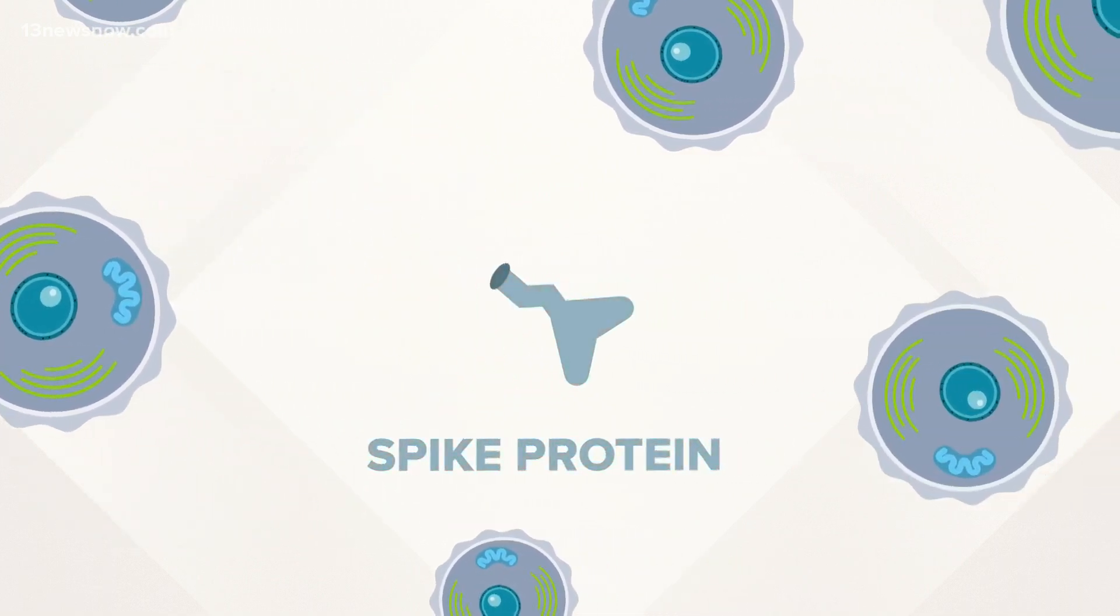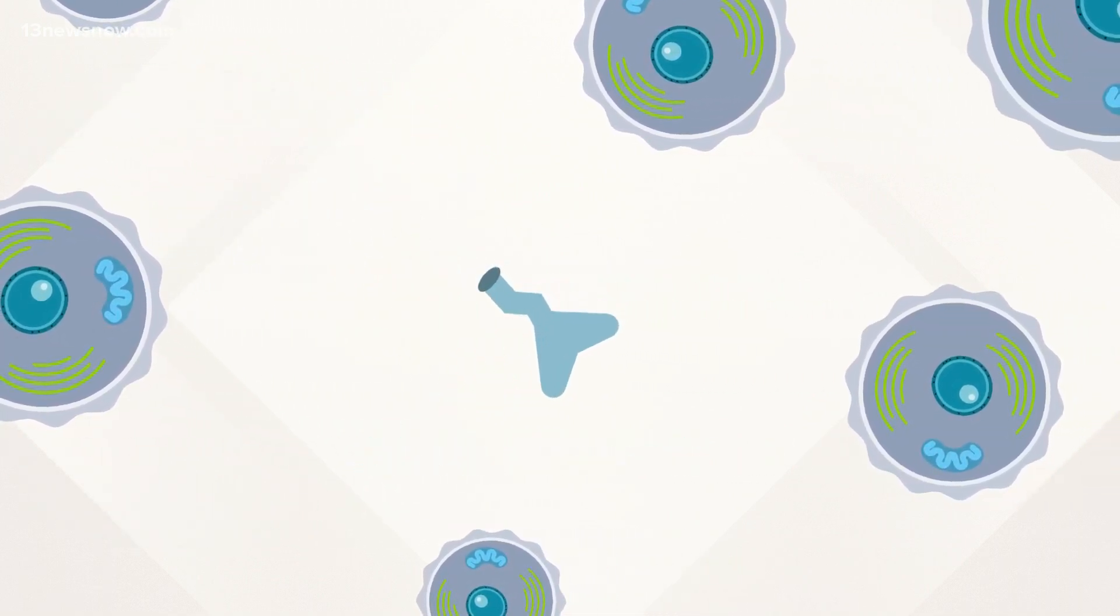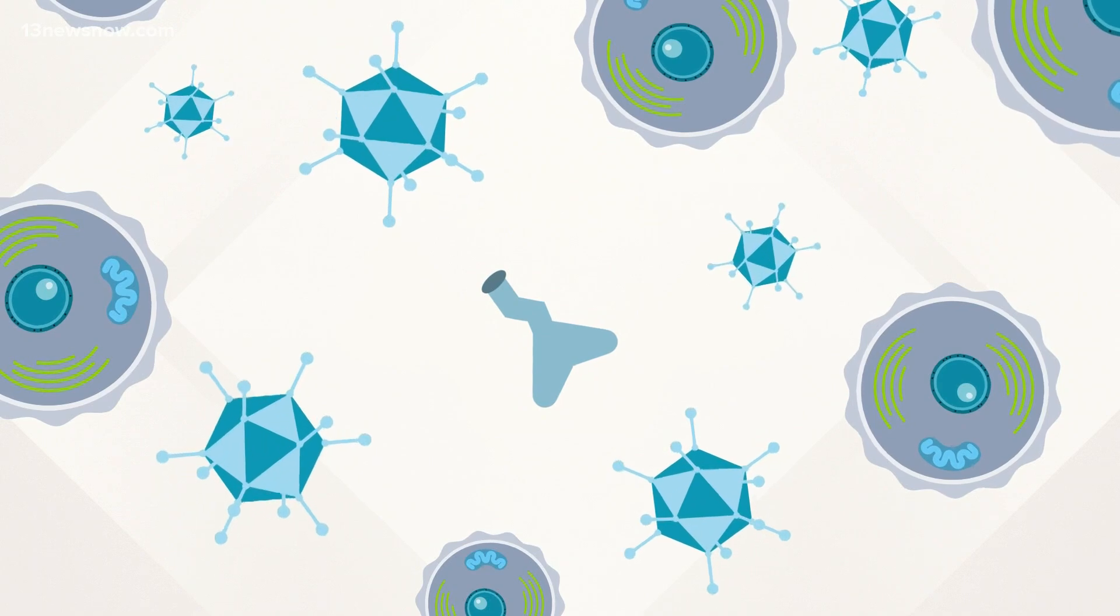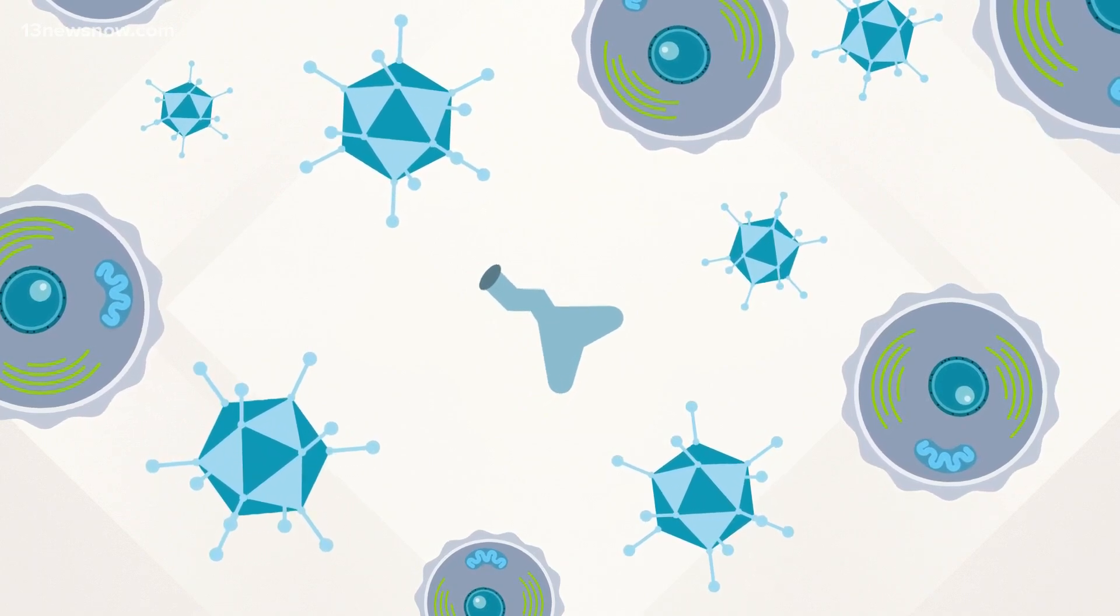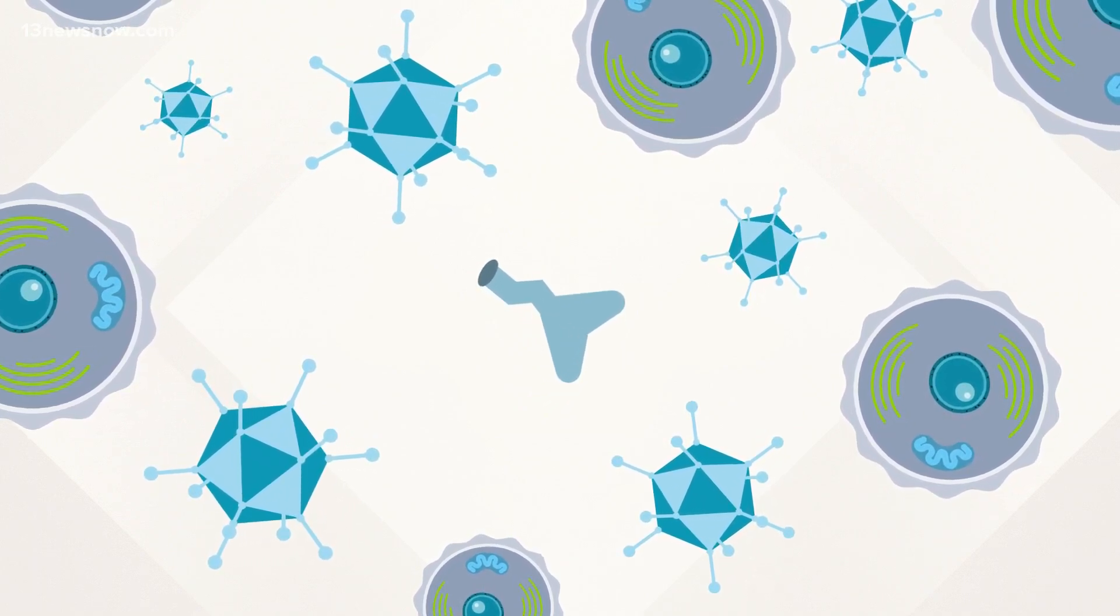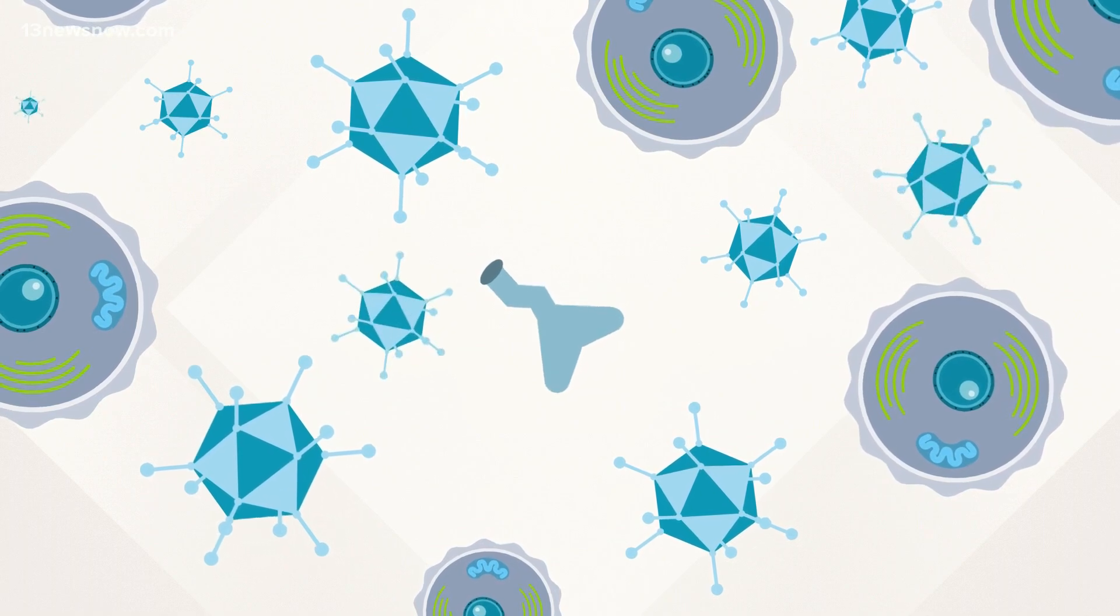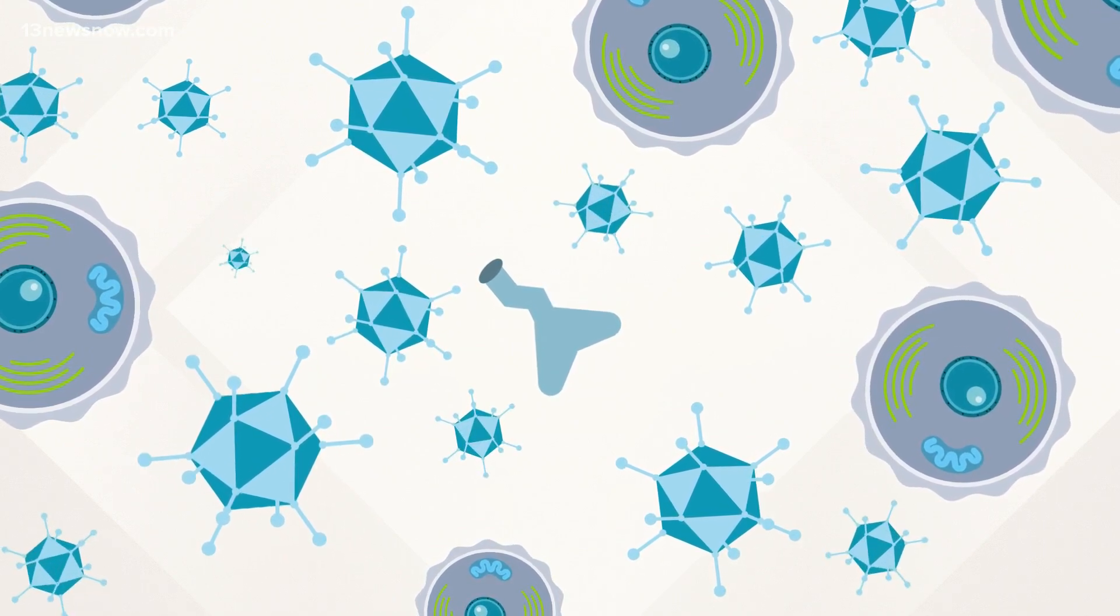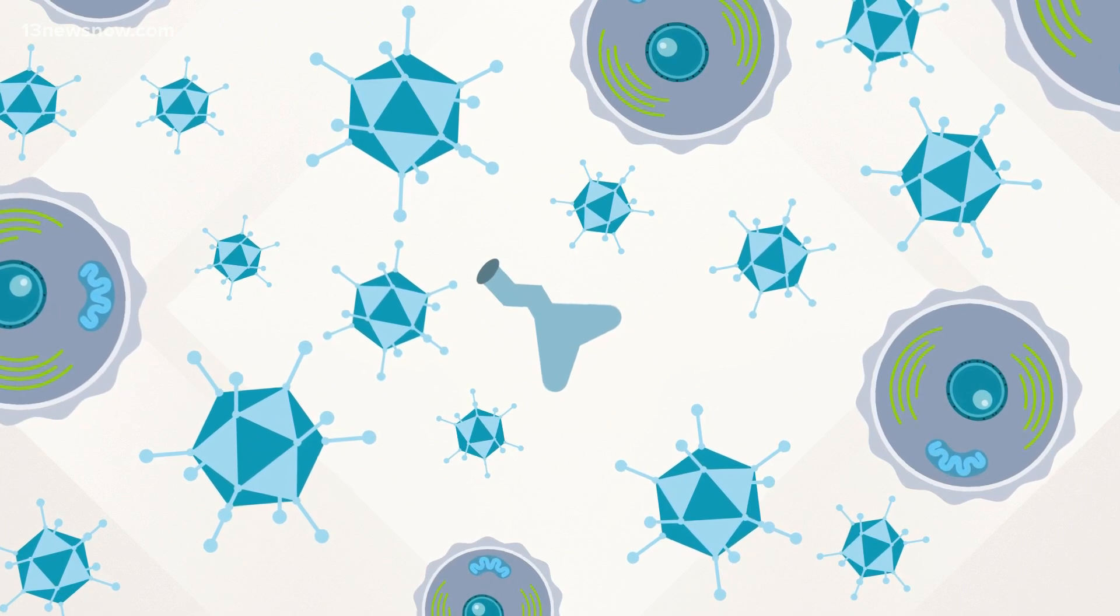On its own, the spike protein is harmless, but scientists found it does trigger an immune response among germ-fighting cells. So your body learns what the invader looks like and starts building an antibody army to be ready to fight the coronavirus before it's ever actually exposed to it.